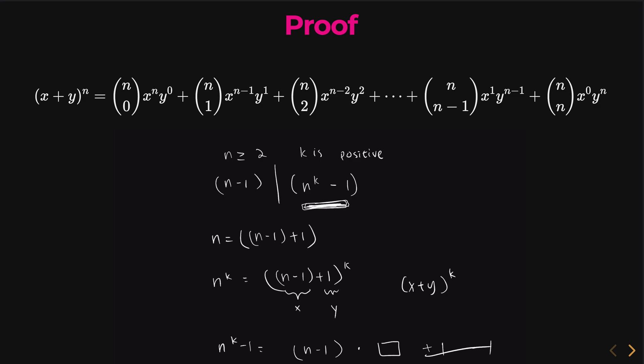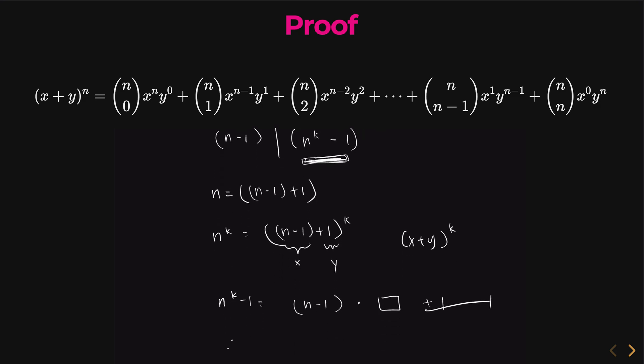Since n to the 1 times some integer, this means that whatever that value is, whatever n to the k minus 1 is, is definitely divisible by n minus 1. So therefore, n minus 1 divides n to the k minus 1. And this is our proof right here using the binomial theorem.